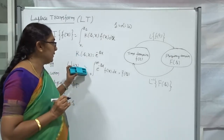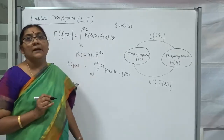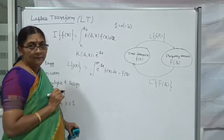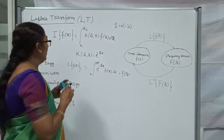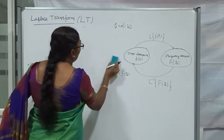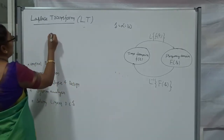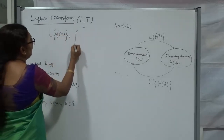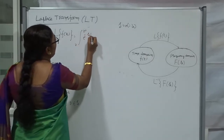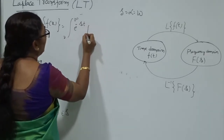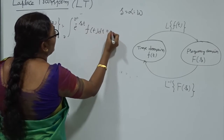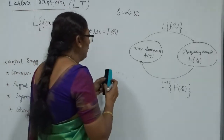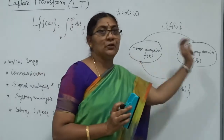Therefore, Laplace Transform cannot be defined directly — it is one particular case of the Integral Transform. Now, once again, the formula for the Laplace Transform of f(t) is: L{f(t)} = ∫₀^∞ e^(-st) · f(t) dt. Once we evaluate this integral, we get a value in terms of the parameter s, denoted by capital F(s). Applying Laplace Transform converts one type of function into another type of function.